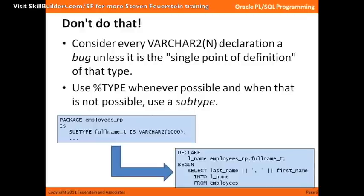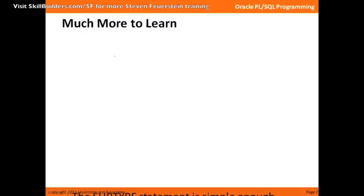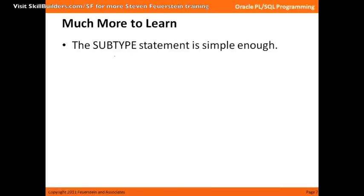SUBTYPE is a perfect way to avoid ever having a hard-coded VARCHAR2 declaration. And seriously, you should consider it a bug. This should be fairly easy to search through in your code — you could do a search for all your VARCHAR2 declarations using a text search or using PL/Scope, which is an 11g feature that allows you to do really nice detailed searching through your code base. You can identify all of these potential bugs and go about changing them. The SUBTYPE statement is simple enough, and that's one of the things I love about it — it's a trivial feature from the standpoint of syntax, but it has an incredibly powerful impact on the maintainability, quality, and readability of your code.